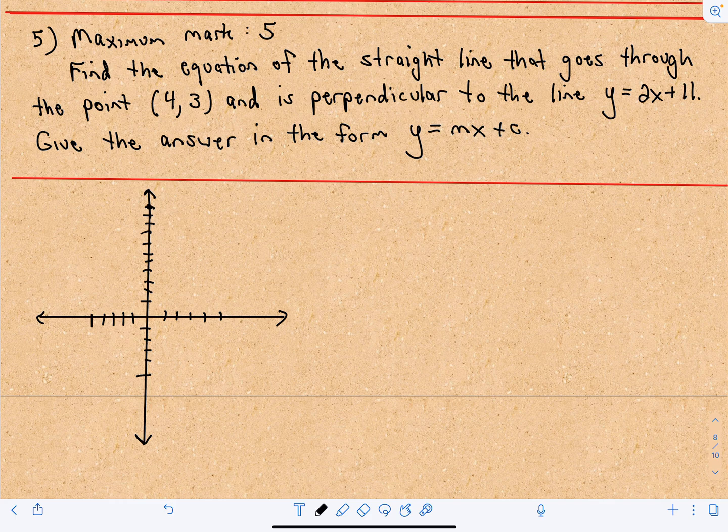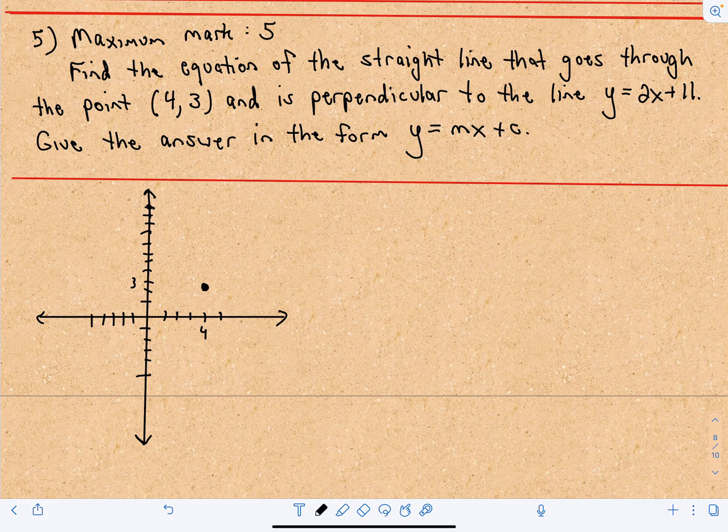So you don't need a picture for this one, but I'm going to make one anyway. So let's say that this is the x-coordinate of 4. Let's go up. This is the y-coordinate of 3. So there's our point that we want our new line to go through.